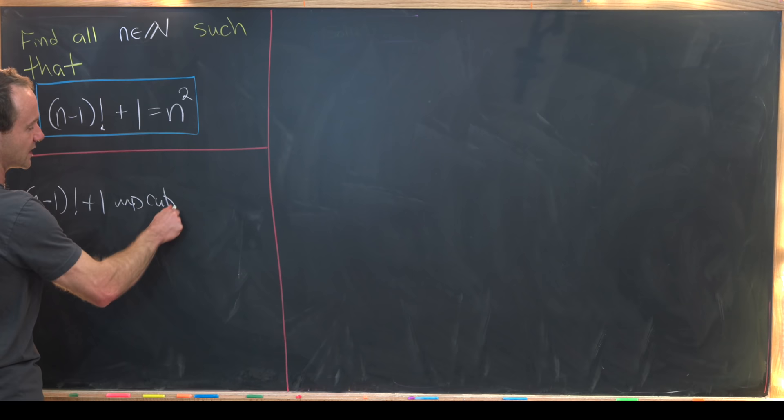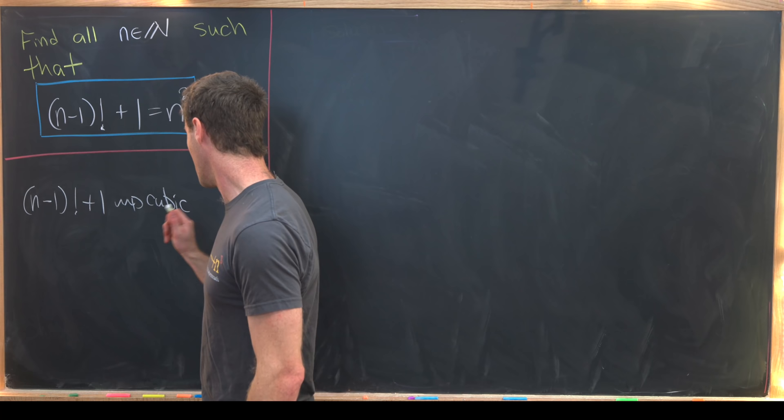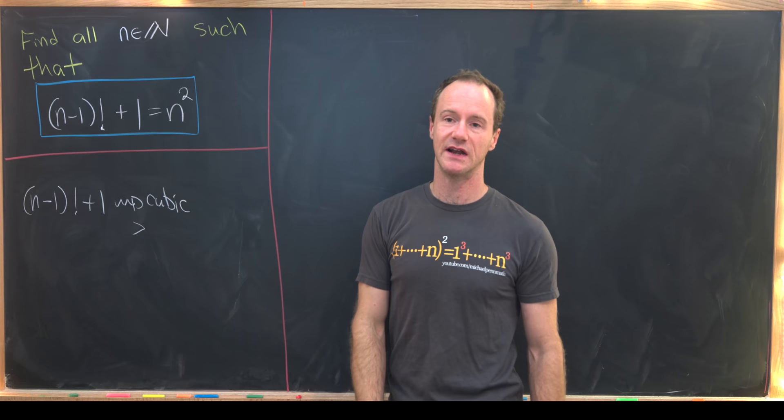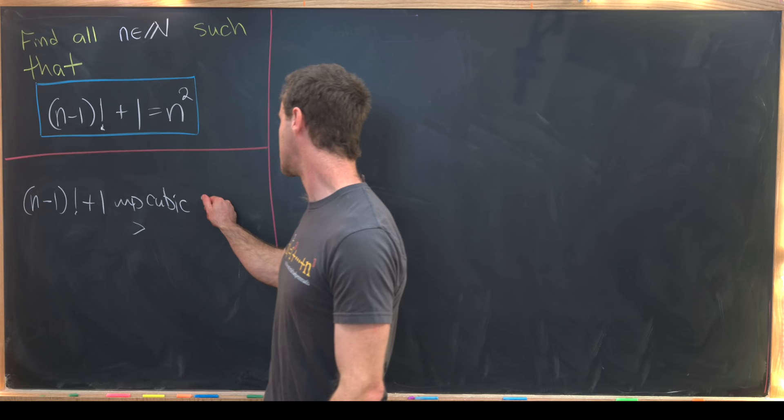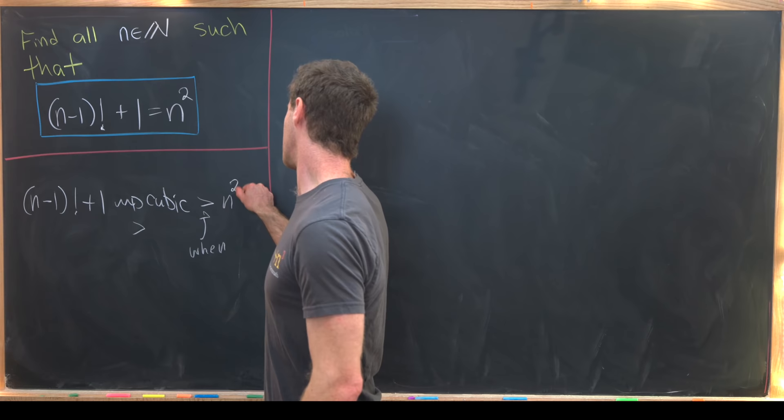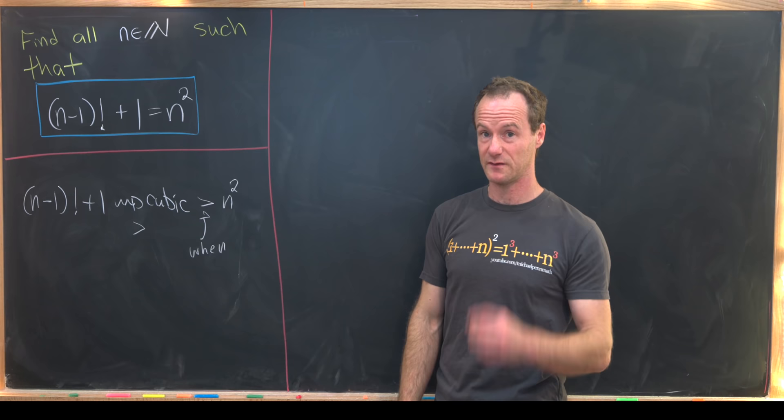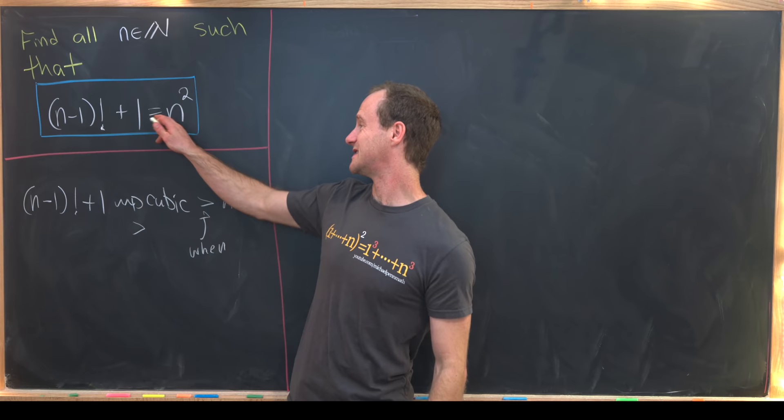Well maybe we'll replace n minus 1 factorial plus 1 with some cubic polynomial and we'll replace it with a cubic polynomial that is always less than our n minus 1 factorial. But then if you've got a cubic polynomial it's pretty easy to check when a cubic polynomial is bigger than our n squared type term. So that's kind of the idea behind all of this.